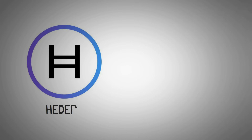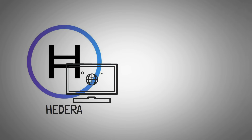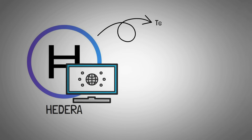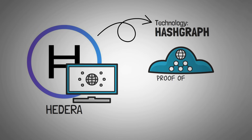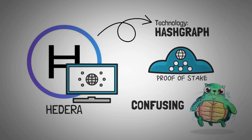Hedera is a public network similar to the internet and other blockchains we've talked about in the past. Hedera specifically runs on a hashgraph form of technology, which is a relatively new type of data management that uses a proof-of-stake consensus mechanism. That may sound really technical, but by the end of this video, you'll know exactly what it means.